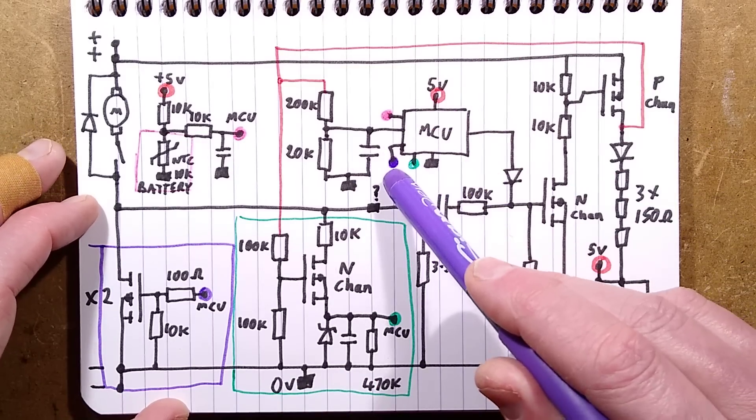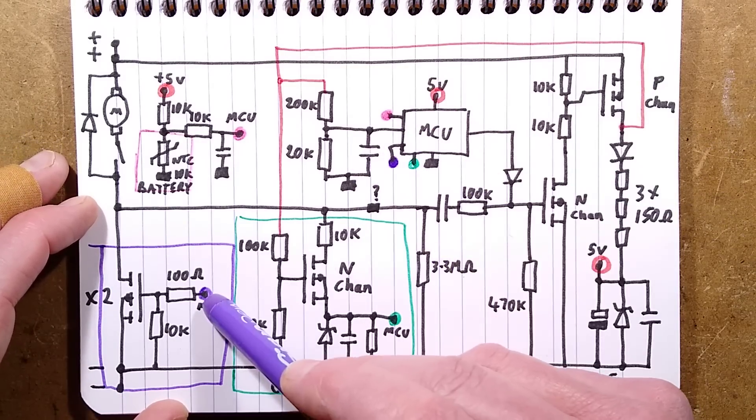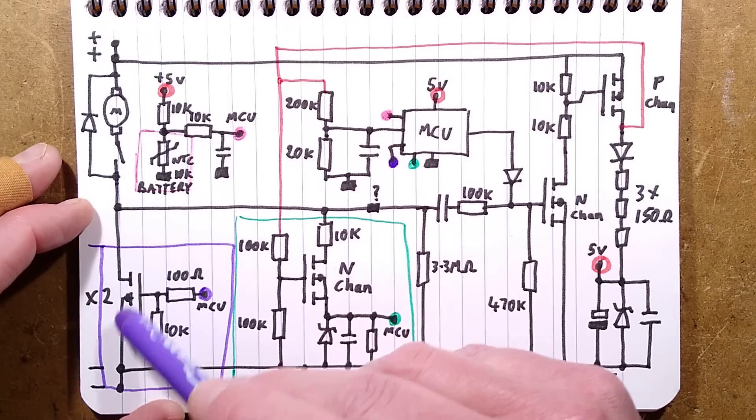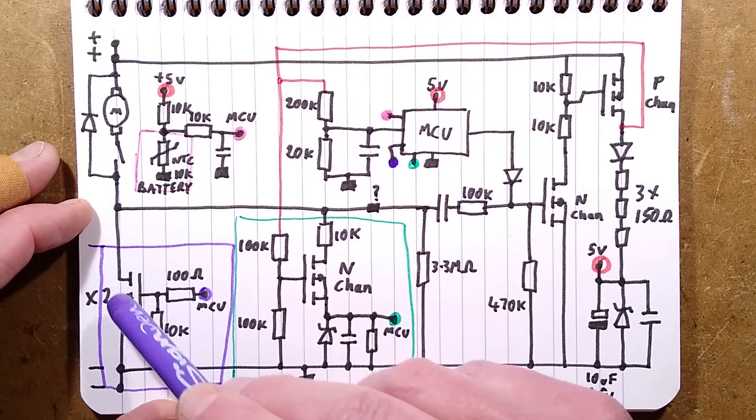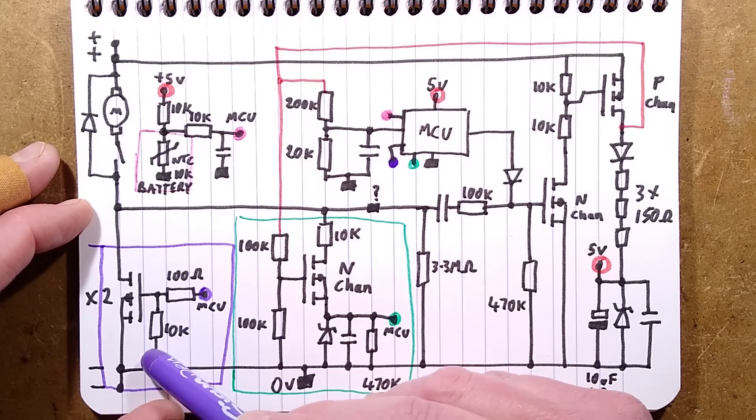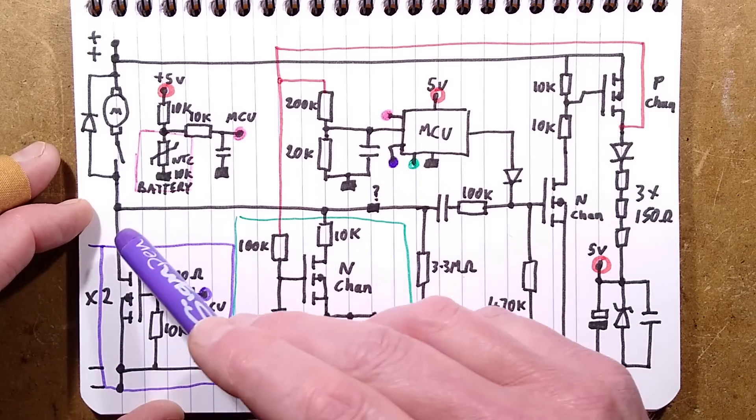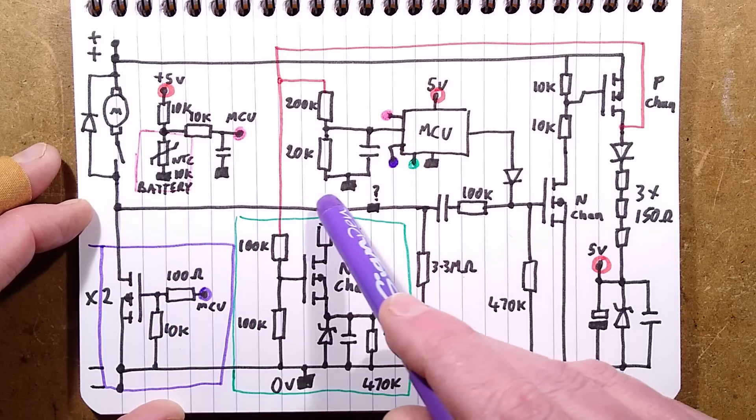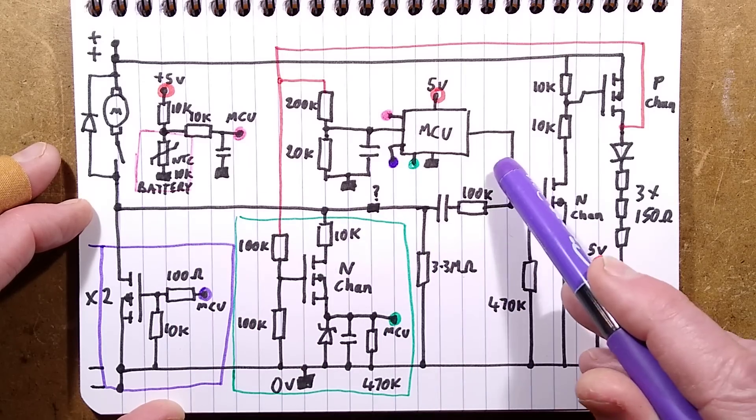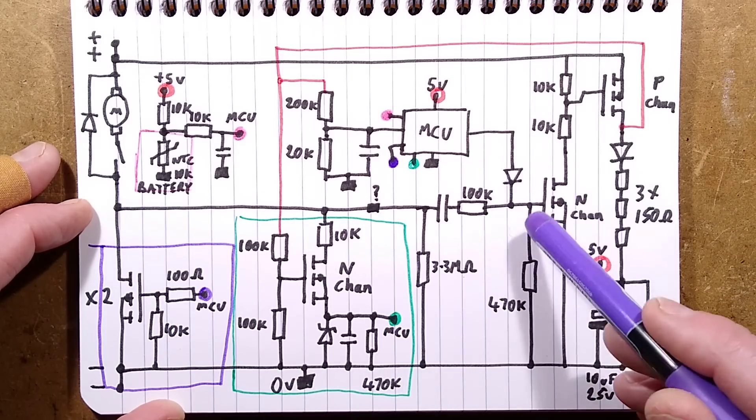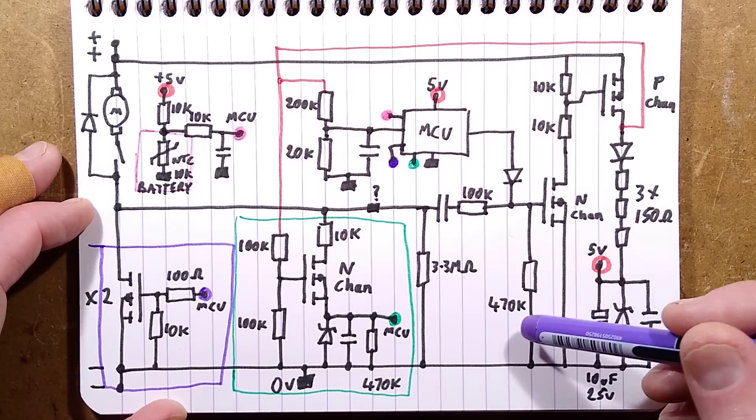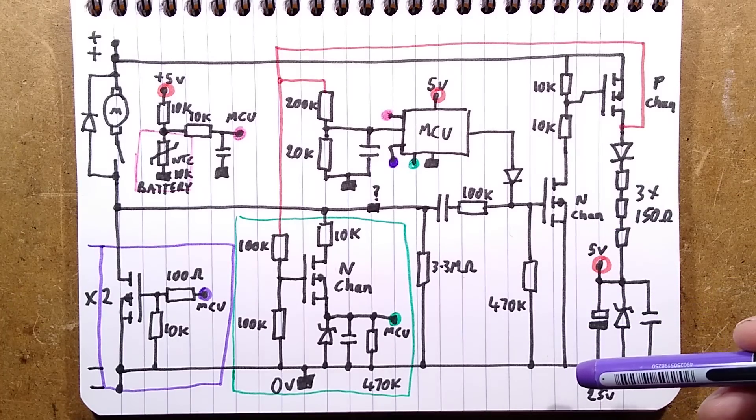Via this 100 ohm resistor to the two parallel MOSFETs, I've just drawn one here, and they have a 10k pull-down resistor, and that will turn them on. At the point they turn on, effectively this line then goes to negative, so it's just as well that is driving that positive, otherwise it would try and turn itself off.